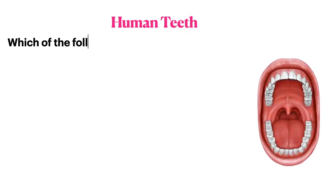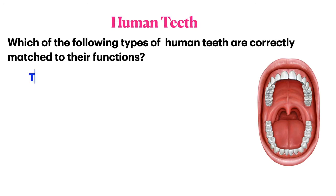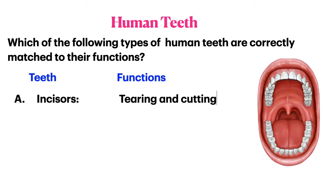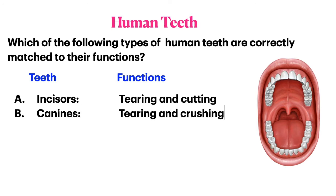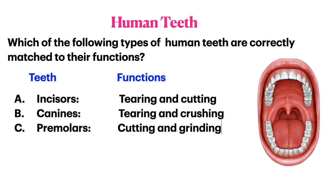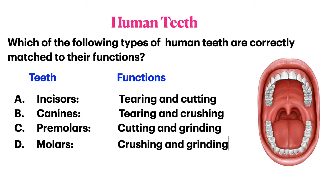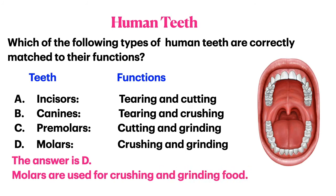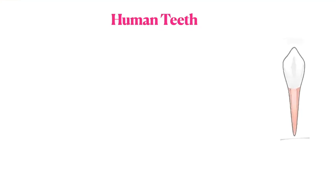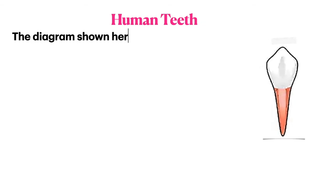Which of the following types of human teeth are correctly matched to their functions? Incisors are for tearing and cutting food; canines are for tearing and crushing food; premolars are for cutting and grinding food; molars are for crushing and grinding food. The answer is D — molars are for crushing and grinding food.